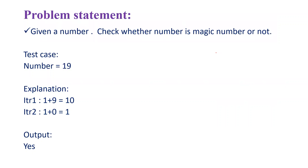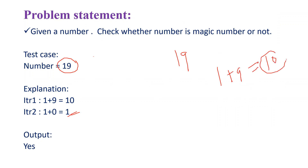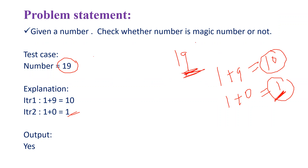Now let's see what a magic number is all about. A number is said to be a magic number if the recursive sum of the digits up to a single digit is equal to 1. For example, take 19: the sum of digits is 1 plus 9, which gives 10. Since 10 is not a single digit, perform the sum again: 1 plus 0 gives 1. Since 1 is a single digit and equals 1, we say that 19 is a magic number.